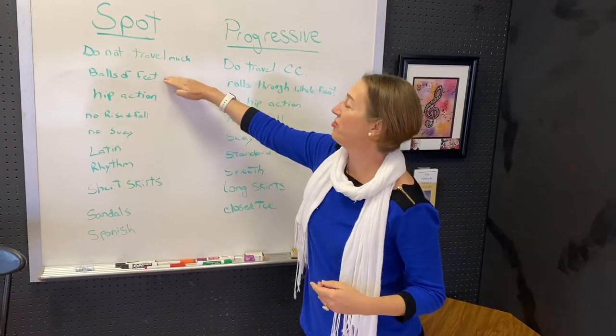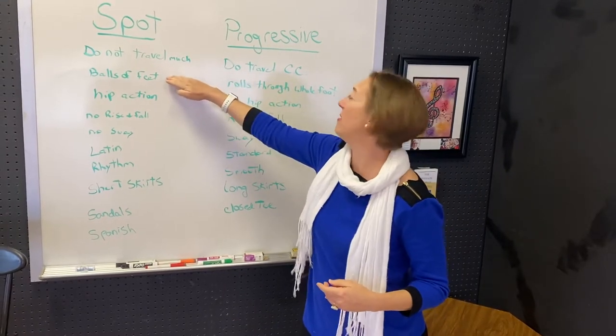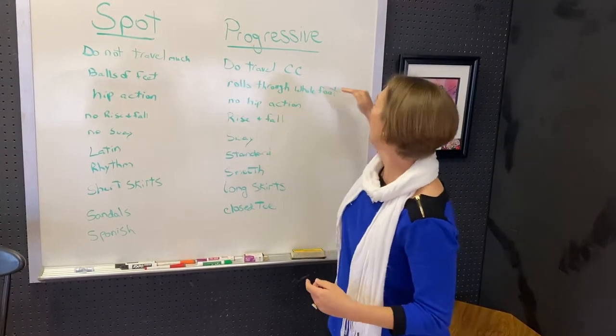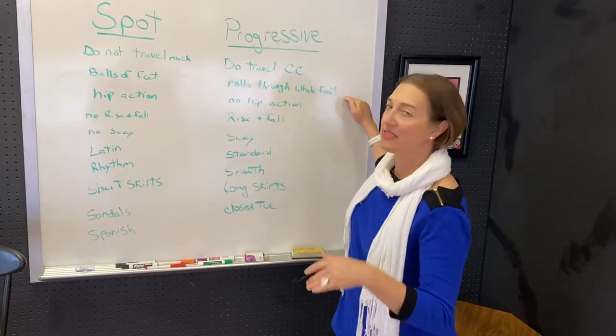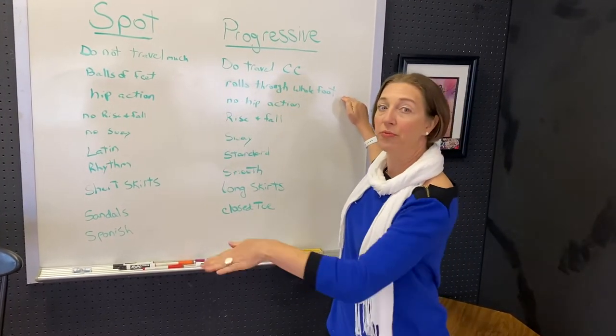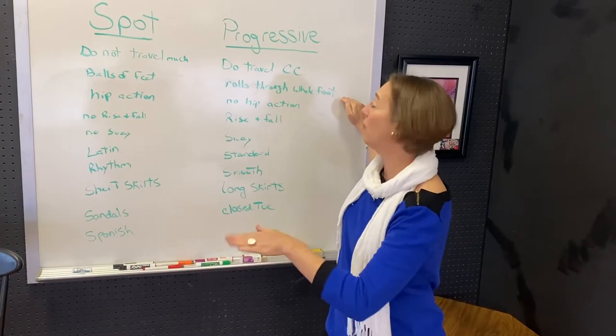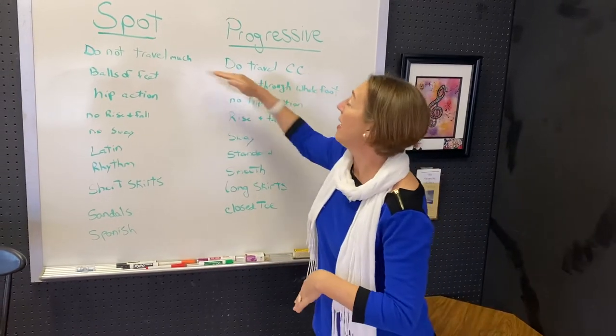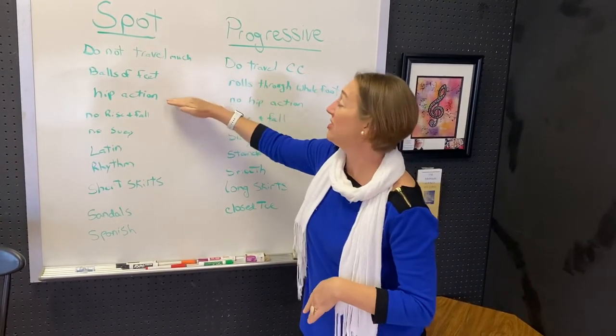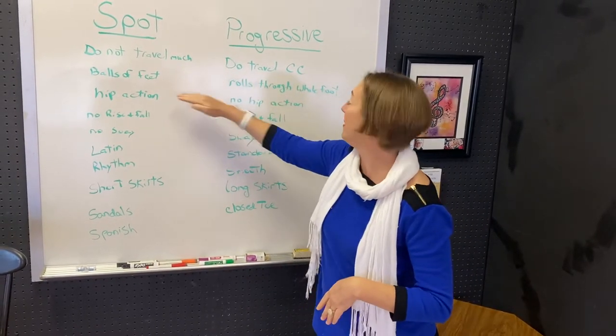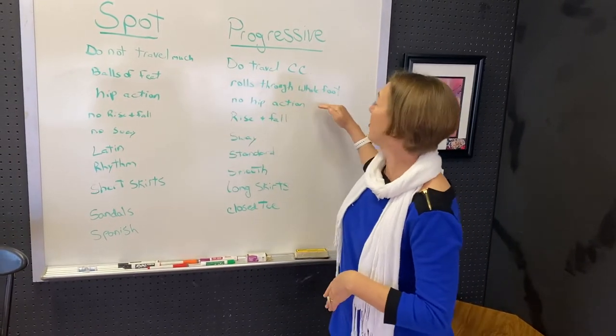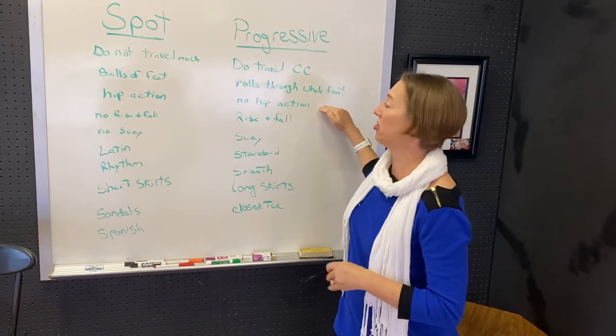Spot dances are usually danced on the balls of the feet, whereas progressive dances will roll through the whole foot. Spot dances usually have hip action. Progressive dances usually do not.